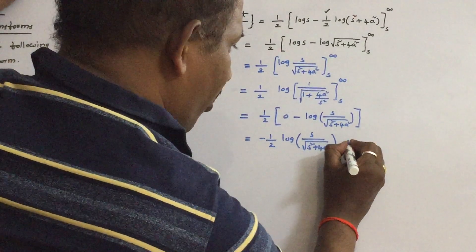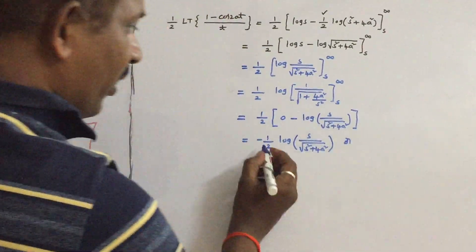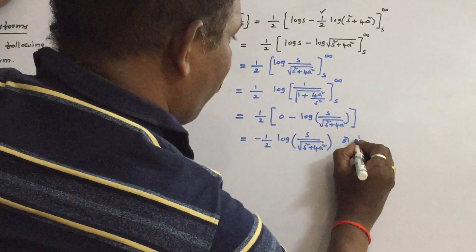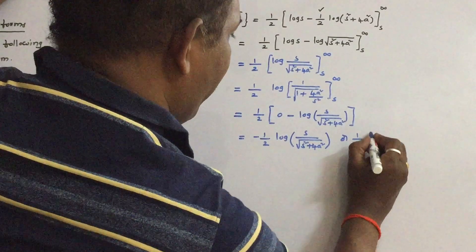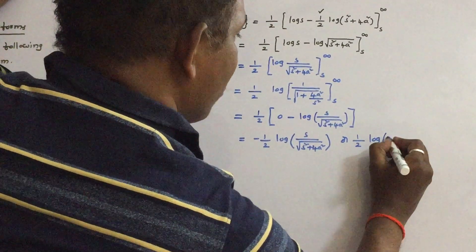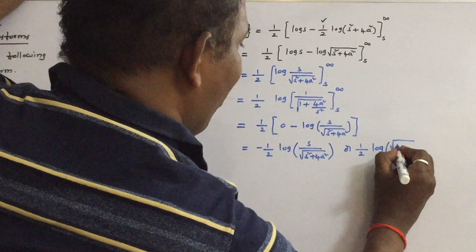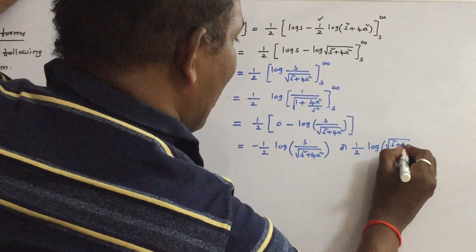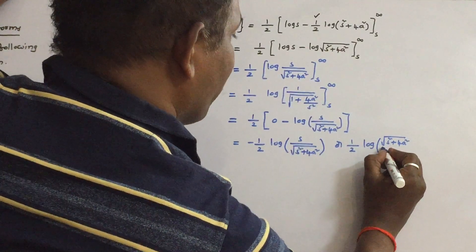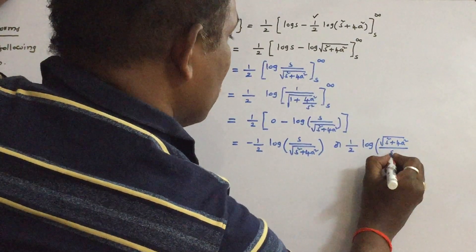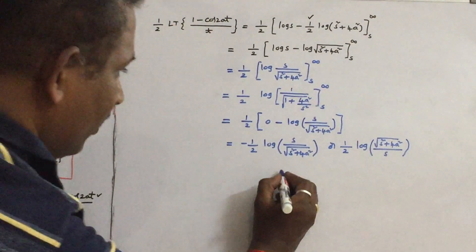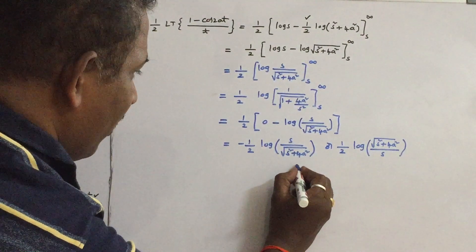Taking the minus sign inside, this can also be written as (1/2) log[√(S² + 4A²) / S]. This is the answer for the given question.